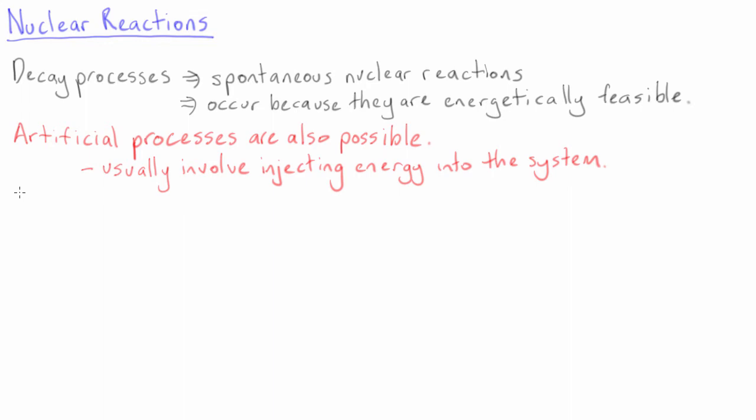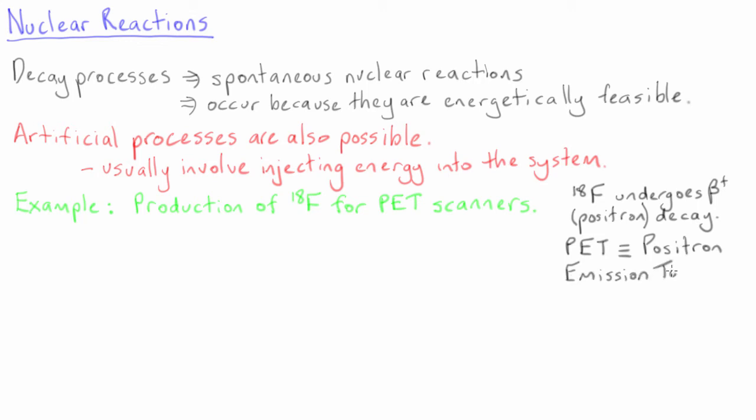Let us look at another example in more detail. The unstable nucleus fluorine-18 undergoes beta-plus decay, emitting positrons. These positrons can combine with electrons to produce gamma rays that can be used to image the location where the fluorine-18 atom decayed. This is the basis of a PET scanner. PET stands for positron emission tomography and is a common medical imaging technique. However, the nucleus fluorine-18 doesn't exist in nature and has a half-life of only 109 minutes. It must be artificially created to be used in a PET scanner.